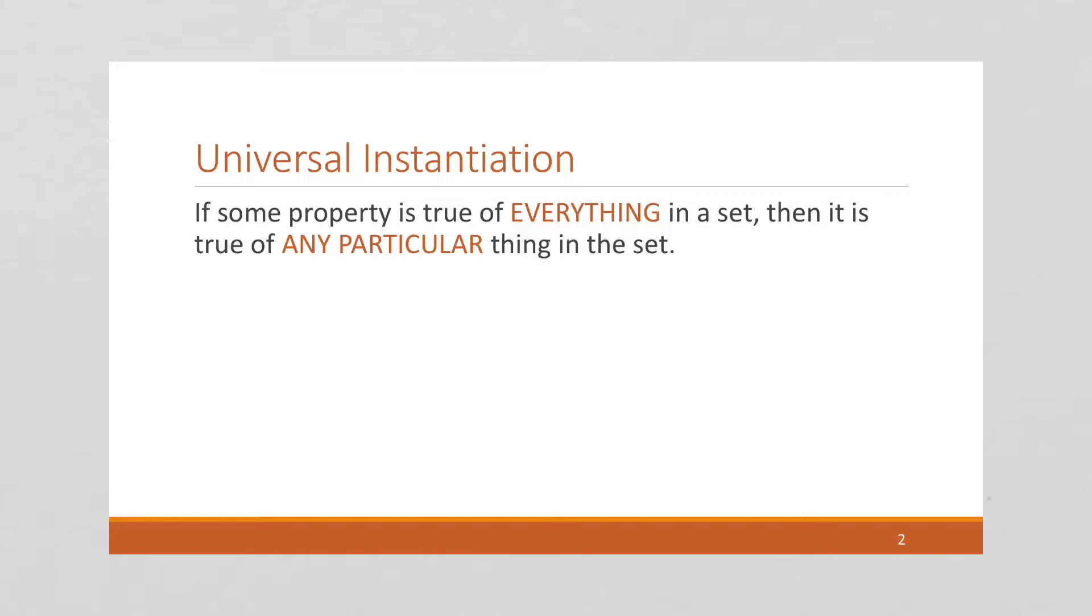Universal instantiation says that if some property is true of everything in a set or group, then it's true of any particular thing in a set or group. And again, this is really simple, but important.